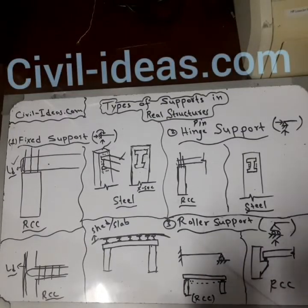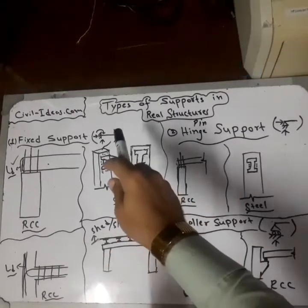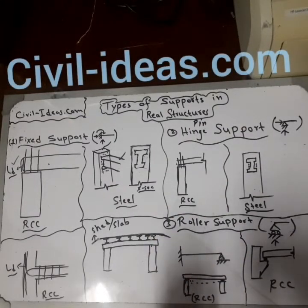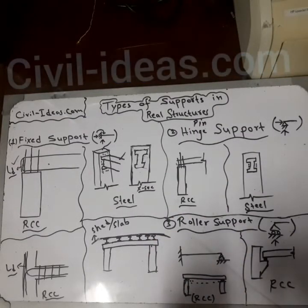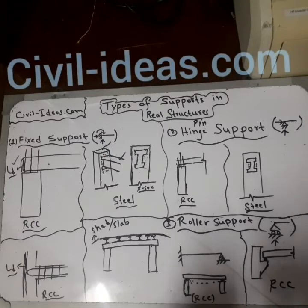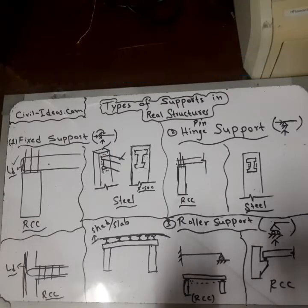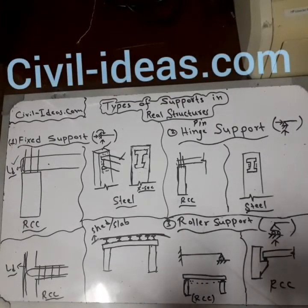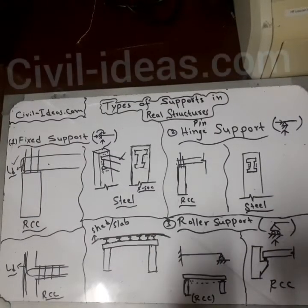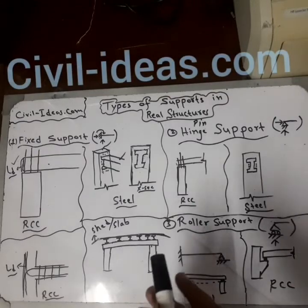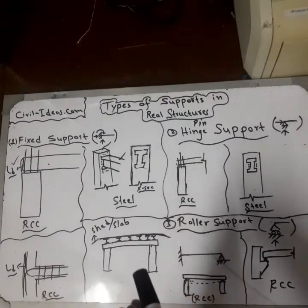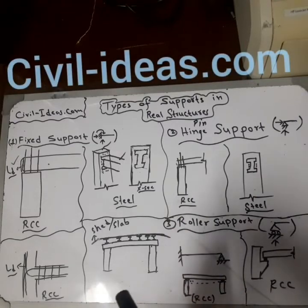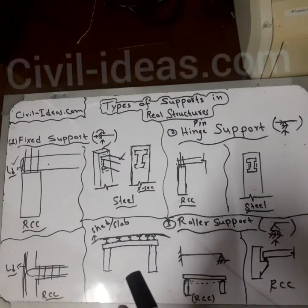Welcome to Seoul Ideas. Today we will discuss the types of supports in real structures. You may have studied different types of supports during your engineering — there are many types, like fixed support, pin support, roller support, and others. Here we will discuss the three most important types: fixed support, hinge support, and roller support.